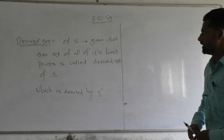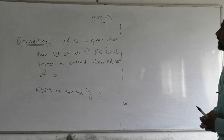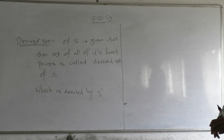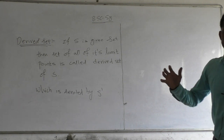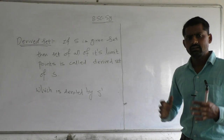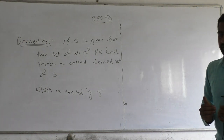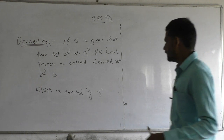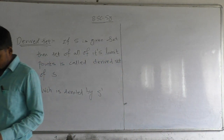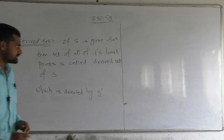So the definition of derived set: if S is a given set, then the set of all its limit points is called the derived set of set S. If we have any given set, collect all the limit points of that set, and that collection is called the derived set, denoted by S dash. Now I am going to discuss some examples.